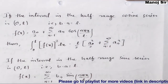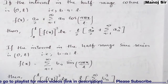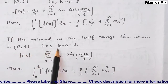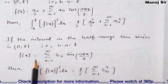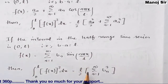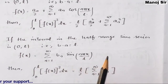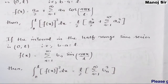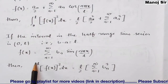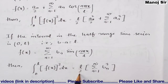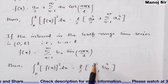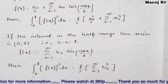For the half-range sine series in the interval (0, l): b−a = l. The series is f(x) = summation from n=1 to infinity of bₙ·sin(nπx/l). Parseval's identity becomes: integral from 0 to l of [f(x)]² dx = (l/2) × summation from n=1 to infinity of bₙ². These are the formulas we will use in various problems.